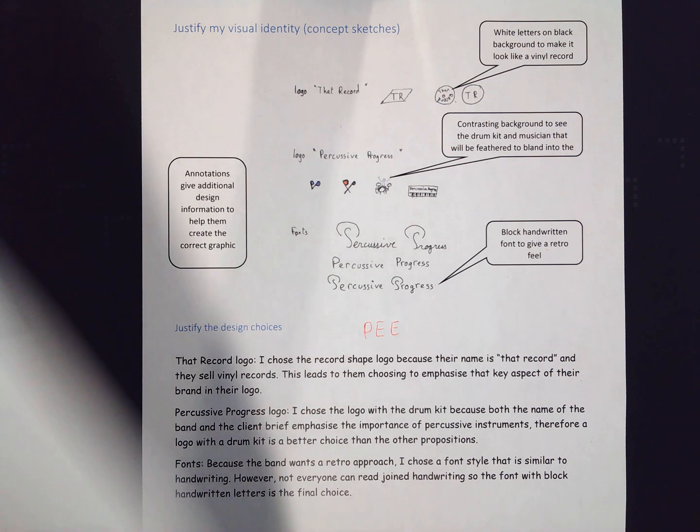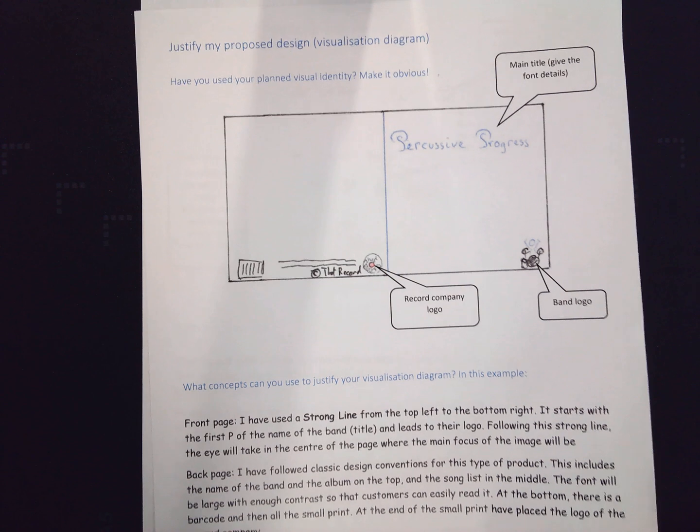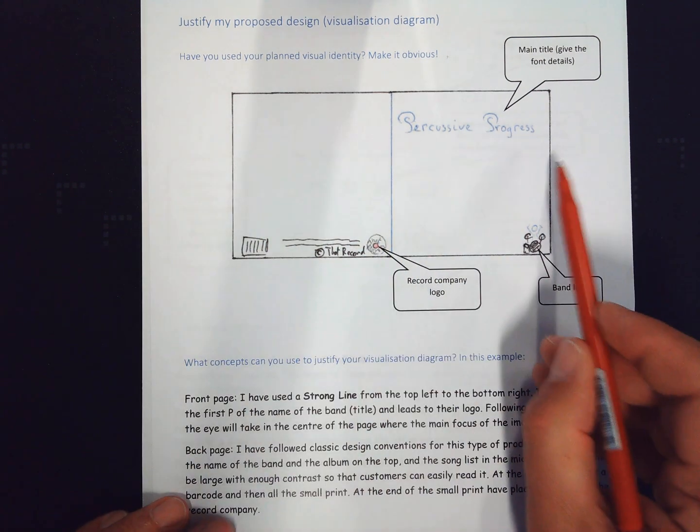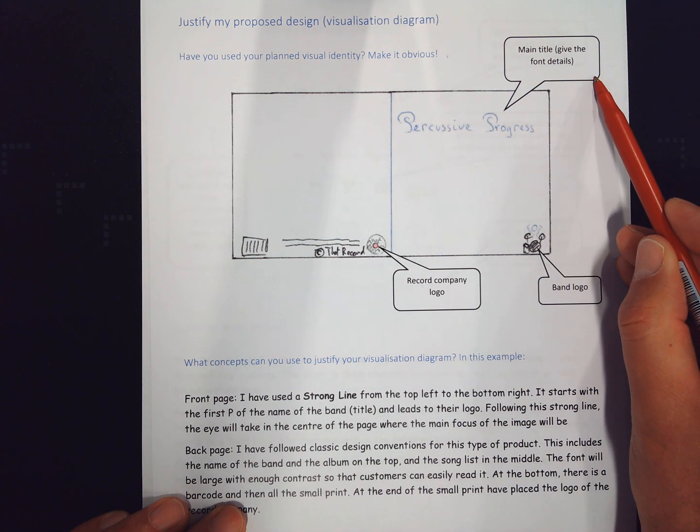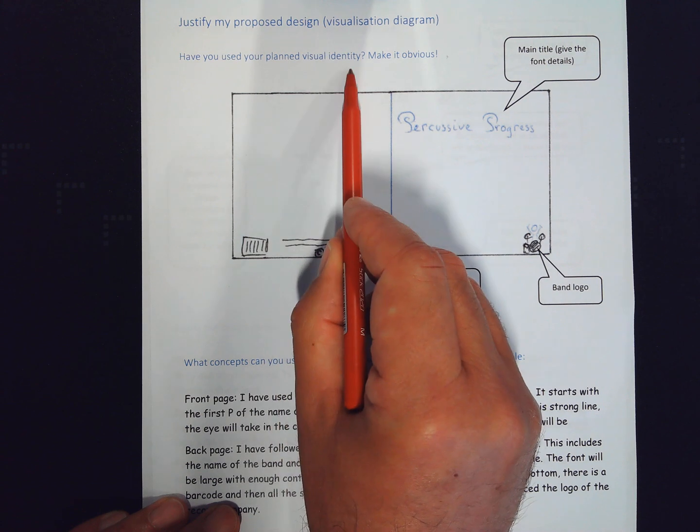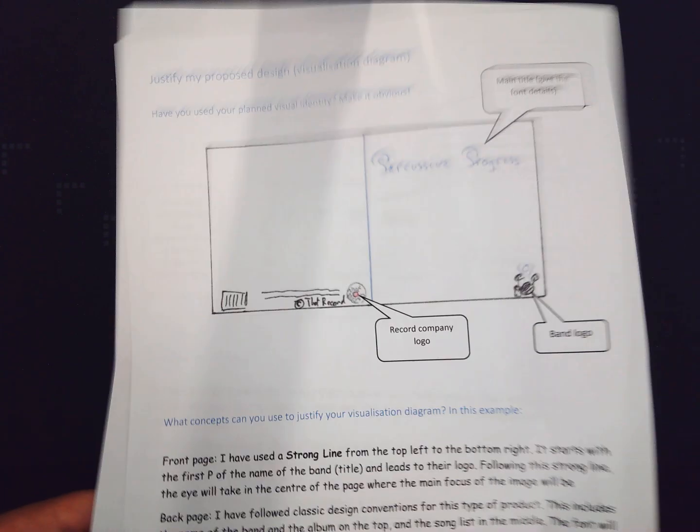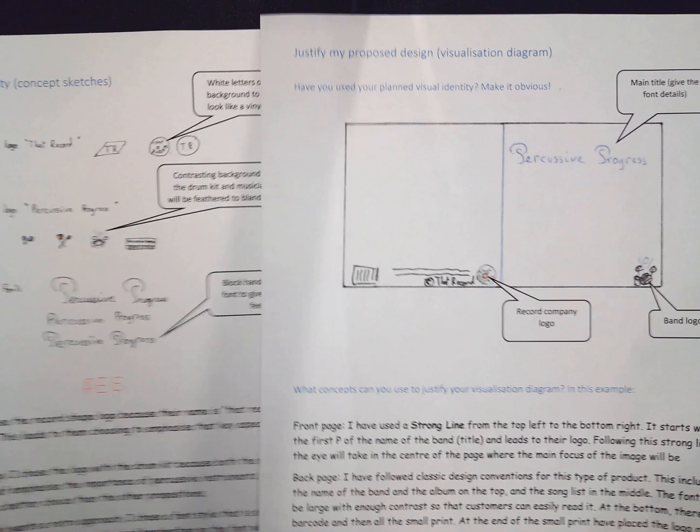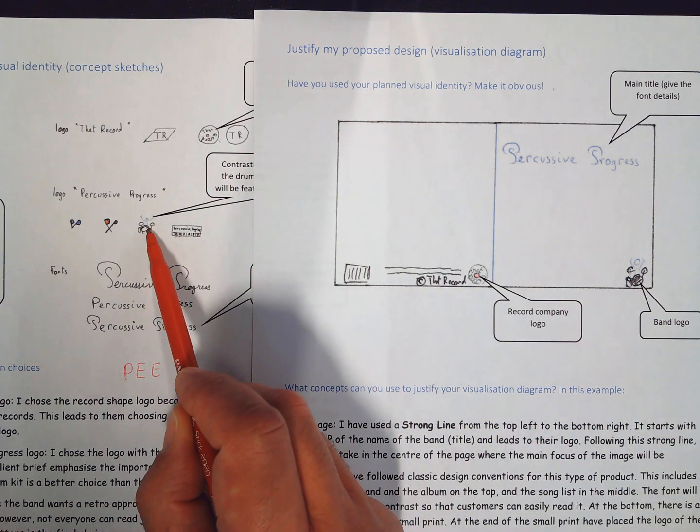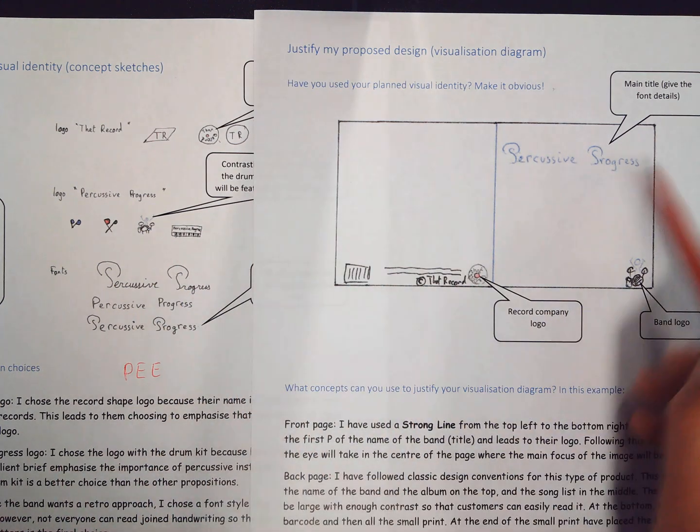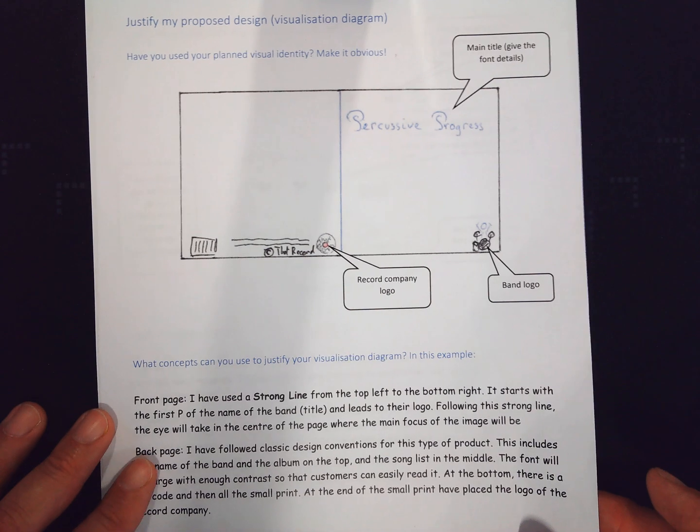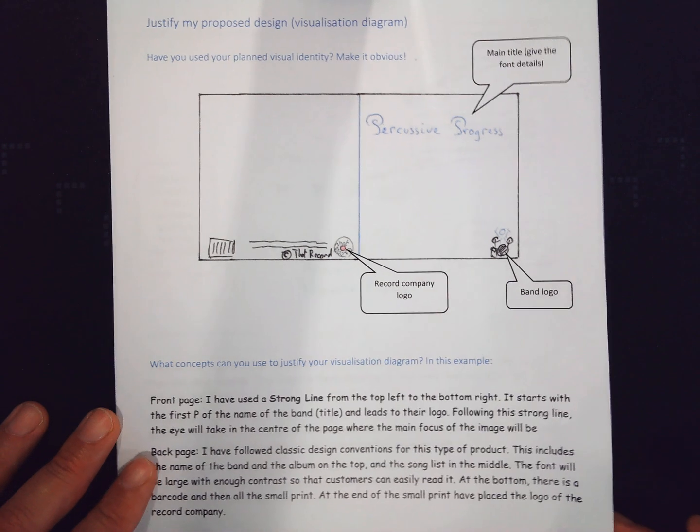And the next document you need to write a justification for is your visualization diagram. Before starting this, I'm going to use some of my annotations for my visualization diagram to make it very obvious that I'm using the planned visual identity. So what I want the moderator to notice is that here is this logo, here's that logo that I've chosen, and then here's my choice of font.